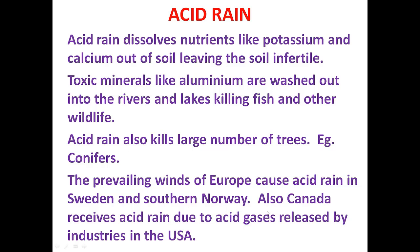In Canada, acid rain is caused by acid gases released by industries in the United States. Because of the wind, these acid gases move over Canada and cause acid rain there.